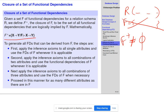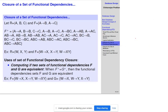Here is another example for practice: R contains ABC and the functional dependencies are A→B and A→C. You can try solving this on your own, and if you have any issues we can discuss it.